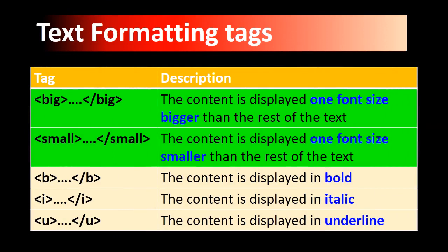The next formatting tags we have to learn are small, big, b for bold, i for italic, and u for underline. If we use the big and slash big tags, whichever word is written between them will be displayed one font size bigger than the rest of the text. Same is the case with small and slash small — whatever is typed between them will be displayed one font size smaller. We will save these in a new web page.